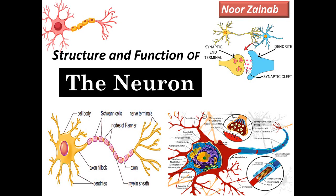Hello everyone, I am Roo Zainab and in this video I am going to tell you about the neuron. The neuron, or the nerve cell, is the structural and functional unit of the nervous system. Our nervous system consists of two main parts: the central nervous system and the peripheral nervous system. The brain and spinal cord make up the central nervous system, whereas the peripheral nervous system consists of all the nerves that emerge out of it. The neurons, which collectively make up the nerves, are the main component of the peripheral nervous system.